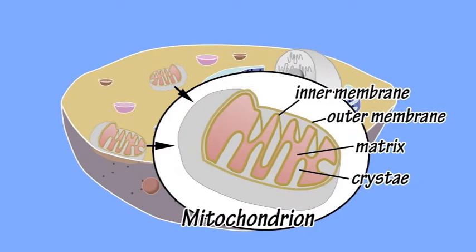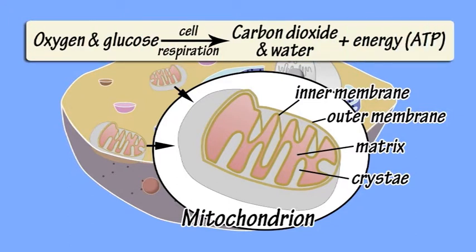Mitochondria are organelles that generate the energy cells need to function, converting oxygen and glucose into carbon dioxide and water and generating energy-bearing molecules of ATP in the process.